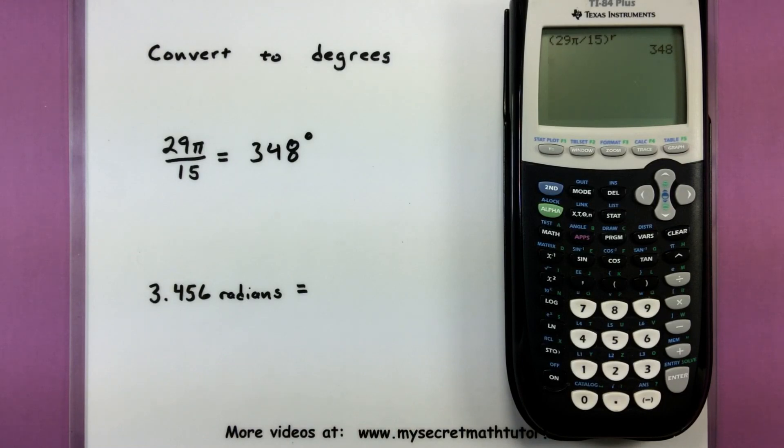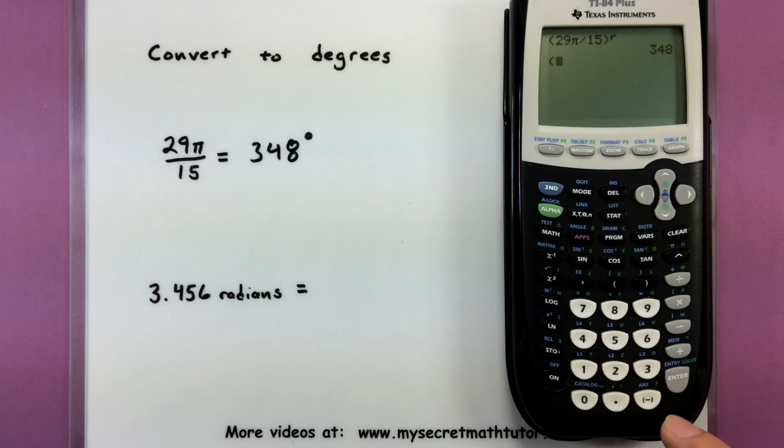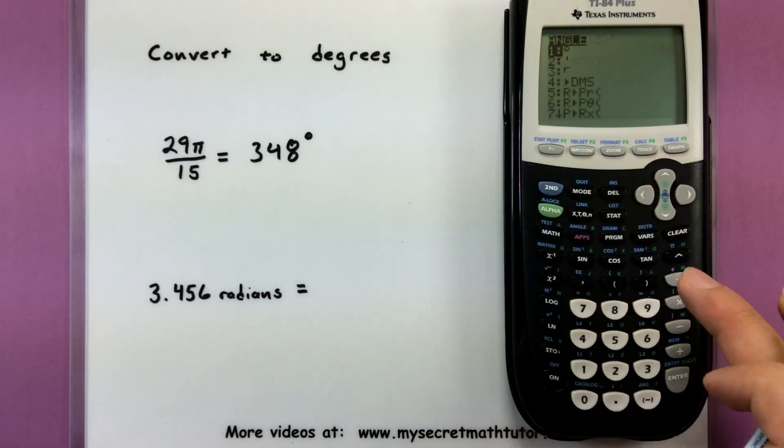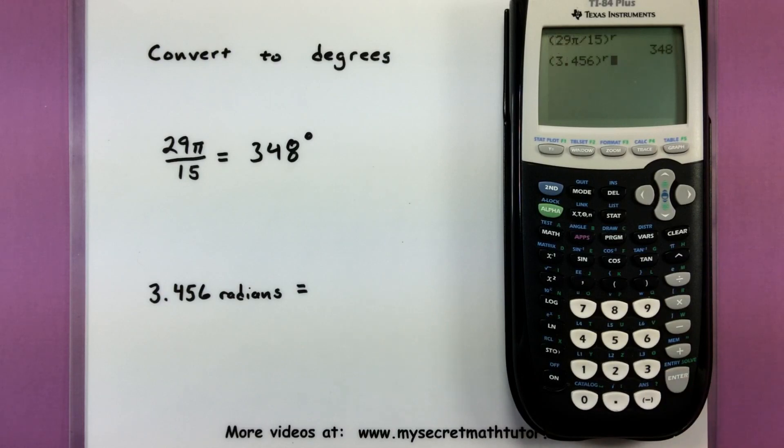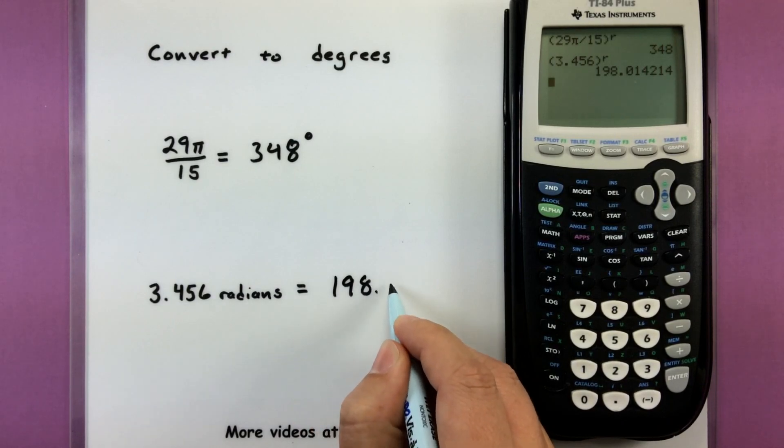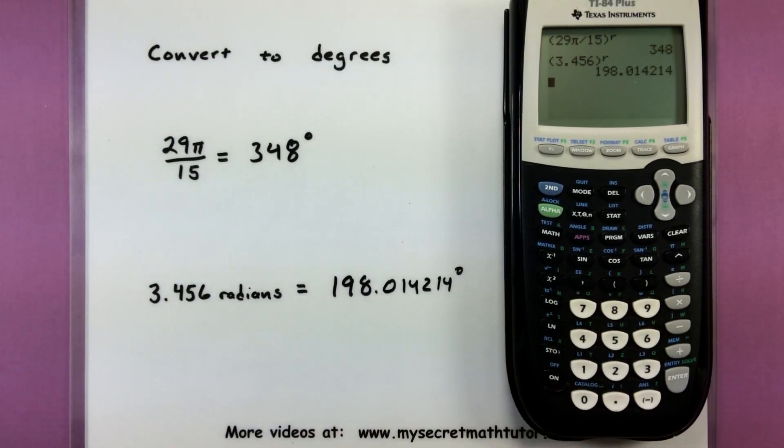This is 3.456. So I'm going to set another set of parentheses. 3.456. Close parentheses. Second angle so I can tell it that it's currently in radians. And I'll press enter. So this one gives me 198.014214. There's our degrees.